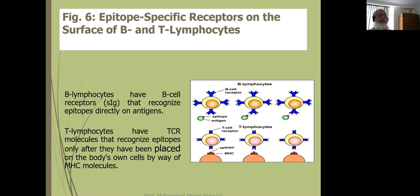There are epitope-specific receptors on the surface of B and T lymphocytes. B and T lymphocyte receptors recognize the antigens. B cell receptor is surface-bound immunoglobulin. B lymphocytes recognize epitopes directly on the antigen with no need of processing and no need of association with MHC. T lymphocytes have some limitations — they can recognize only peptide antigens, and the peptide must be processed and in association with MHC.